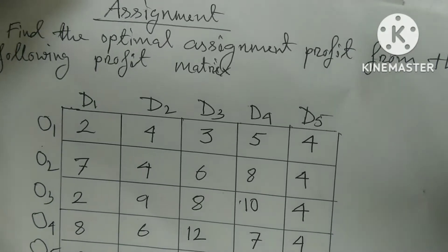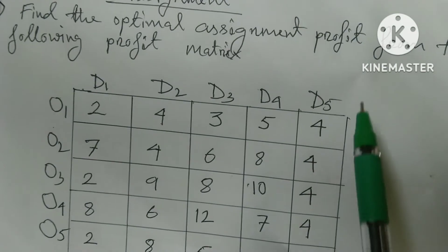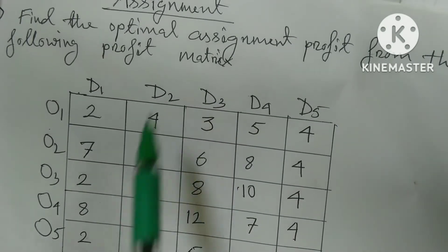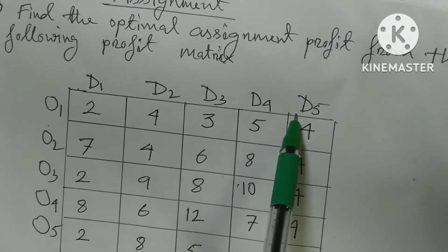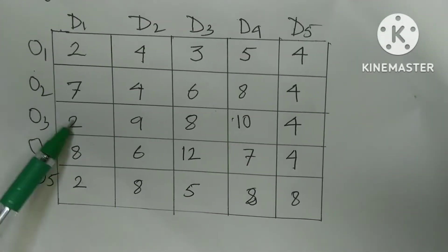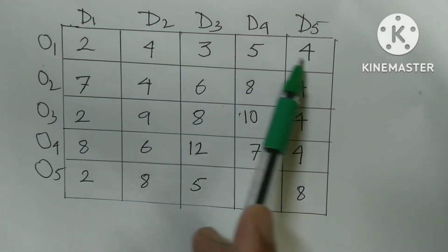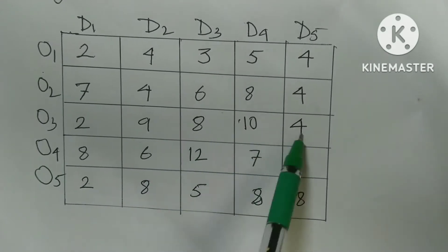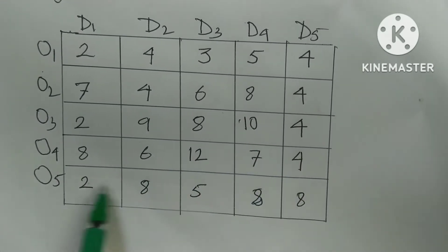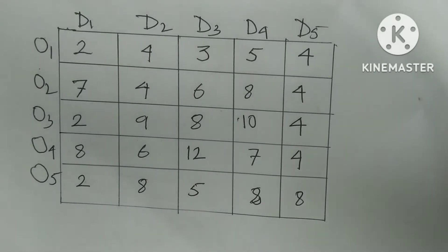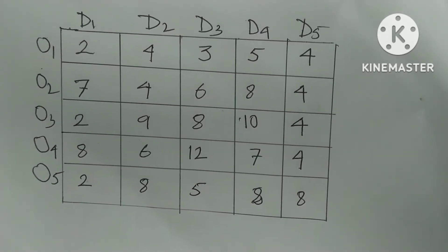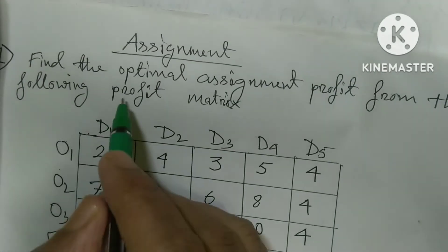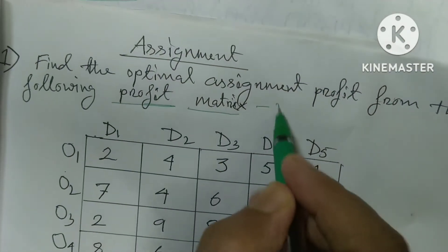Find the optimal assignment profit from the following profit matrix. The matrix has columns D1, D2, D3, D4, D5. The values are: row 1: 2, 4, 3, 5, 4; row 2: 7, 4, 6, 8, 4; row 3: 2, 9, 8, 10, 4; row 4: 8, 6, 2, 7, 4; row 5: 2, 8, 5, 8, 8. This is a profit matrix, which means it is a maximization problem.